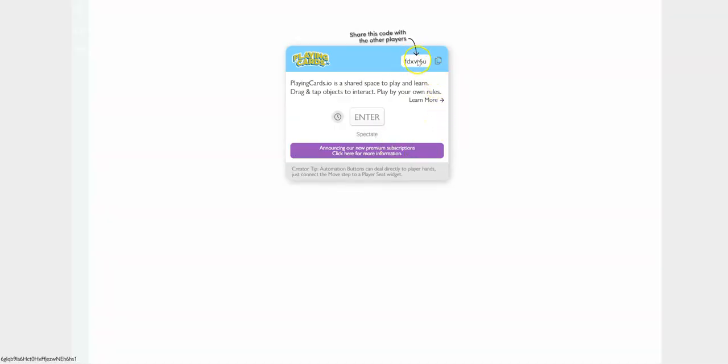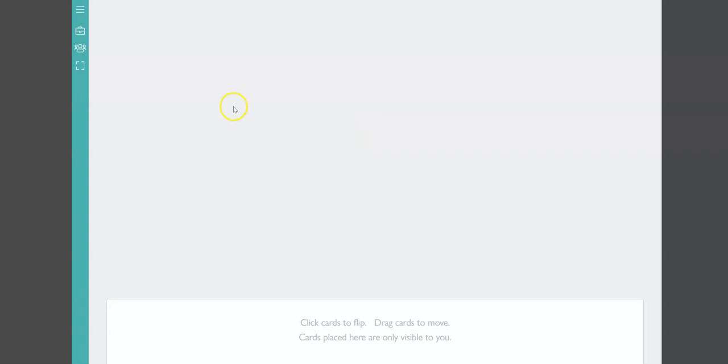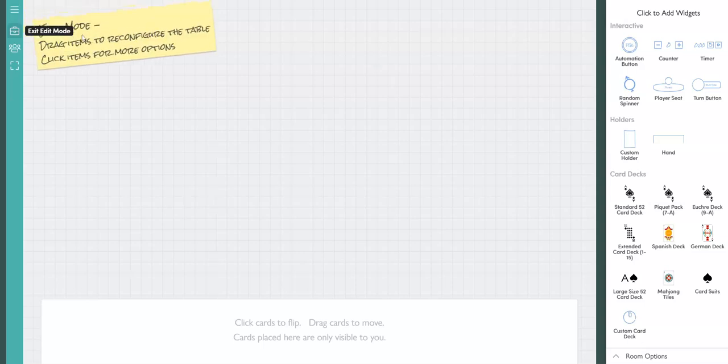You will be given a code. This is what you share with your players when the game has been imported. For now we're going to click enter and then you will click edit the table.